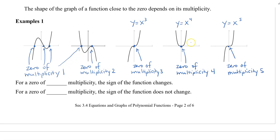Let's just review this again. Notice that when the exponents are odd numbers, it flattens out but the sign of the function changes. So notice that it goes from negative to positive. Same with x to the power of five, it goes from negative to positive.